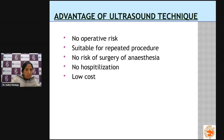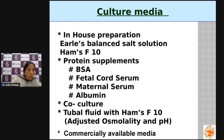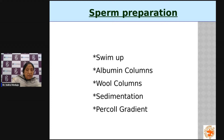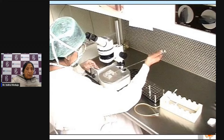These are the different types of culture media used to grow the eggs and sperm and to facilitate their meeting. Initially we used to prepare culture media in-house in the laboratory; now commercially available media are used. These are the different techniques used to prepare the sperm — to collect the motile, healthy sperm. Once prepared, the sperm are added to the egg.